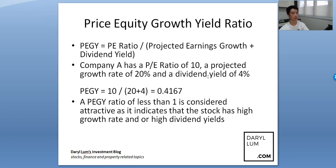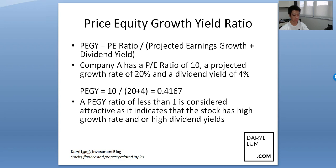It's the price to earnings ratio divided by projected earnings growth plus dividend yield. Anything equal to 1 is considered fair value. Anything smaller — where the denominator is a larger number than the numerator — you get a fraction. So an answer of 0.4167 means a PEGY ratio of less than 1 is considered attractive. It indicates that the stock has a high growth rate or high dividend yield that hasn't been factored into the price yet.